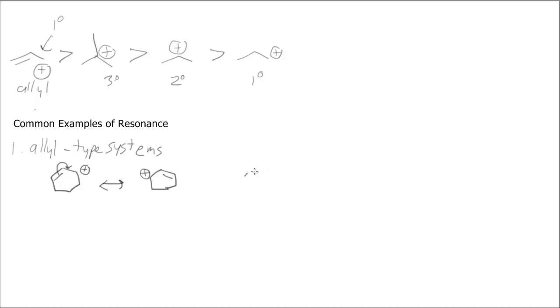You can also do this with an acetate ion. And it's allyl type, even though it doesn't have the carbon-carbon double bond - now we have a carbon-oxygen double bond. And in this case, instead of a carbocation, we have a negative charge over here.